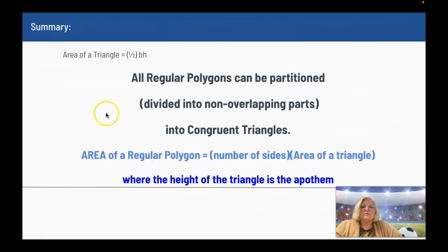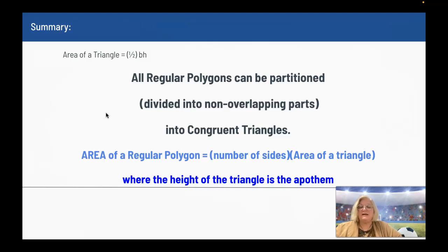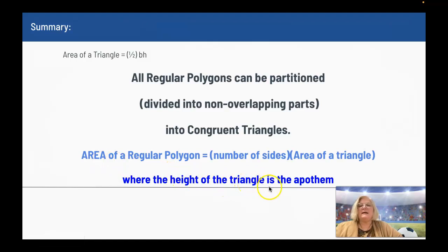So if I'm finding the area of a regular polygon, I can partition it — divide it into non-overlapping congruent triangles — and then find the area of one of the triangles and multiply it by the number of sides to find the area of the regular polygon. Remember that the height of the triangle that you partition it into is called the apothem.